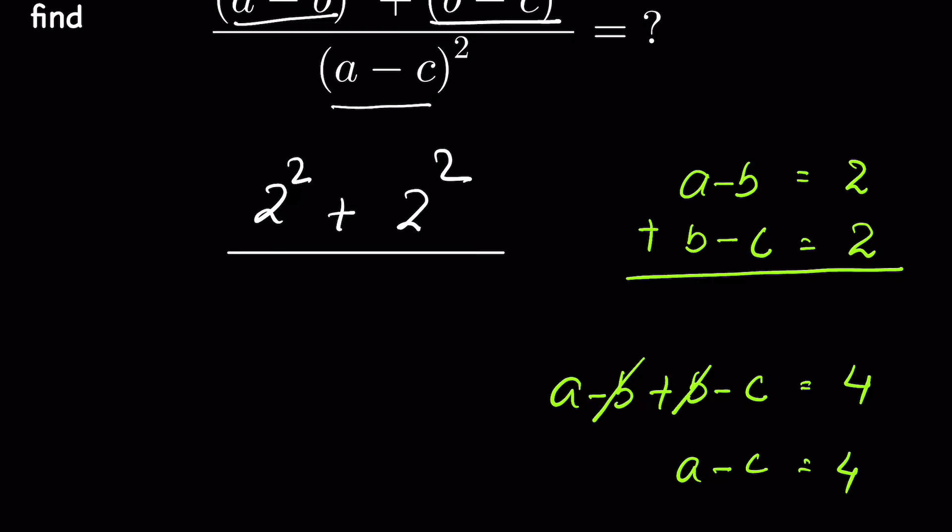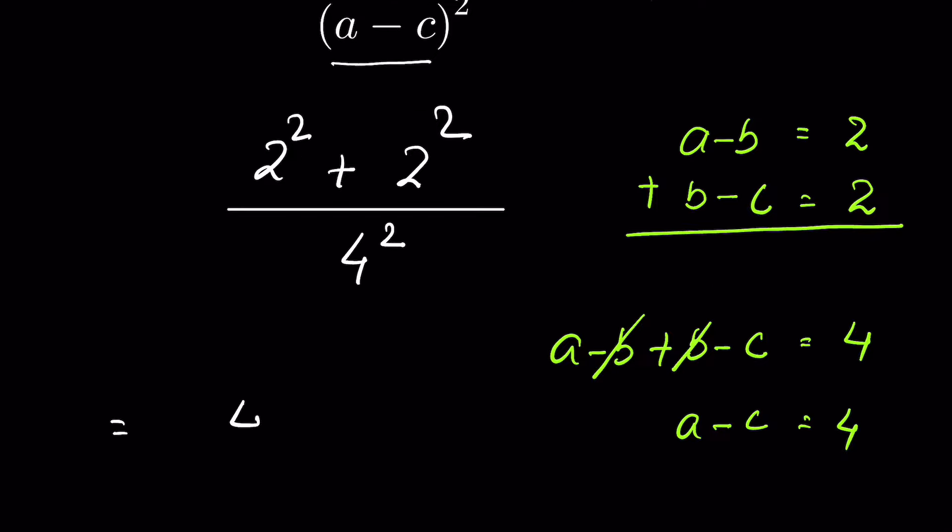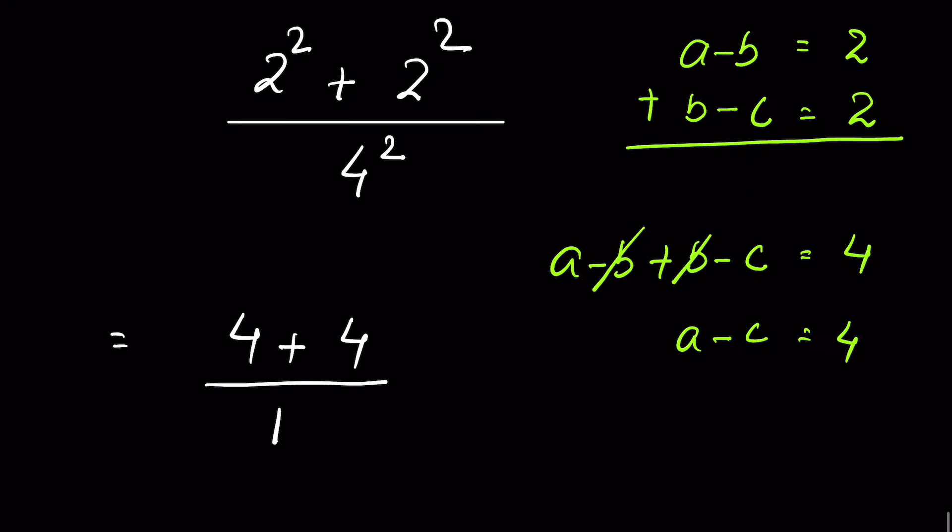So put the value of A minus C, it is 4 square. So 2 square is 4 plus 2 square is 4 upon 4 square is 16. So 8 upon 16 or 1 upon 2. So this is the answer.